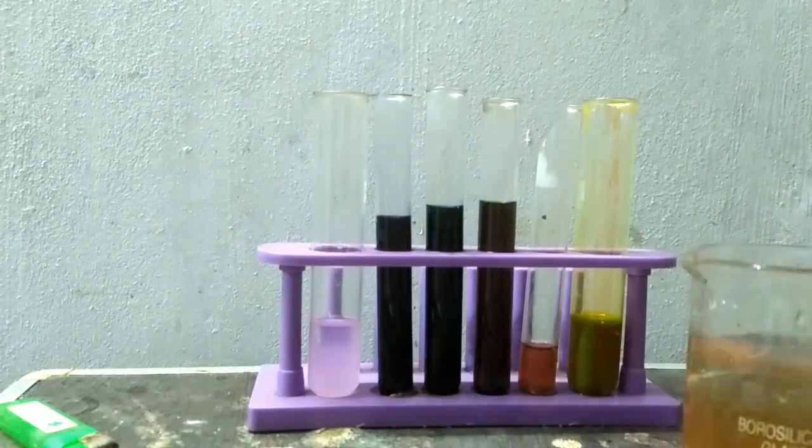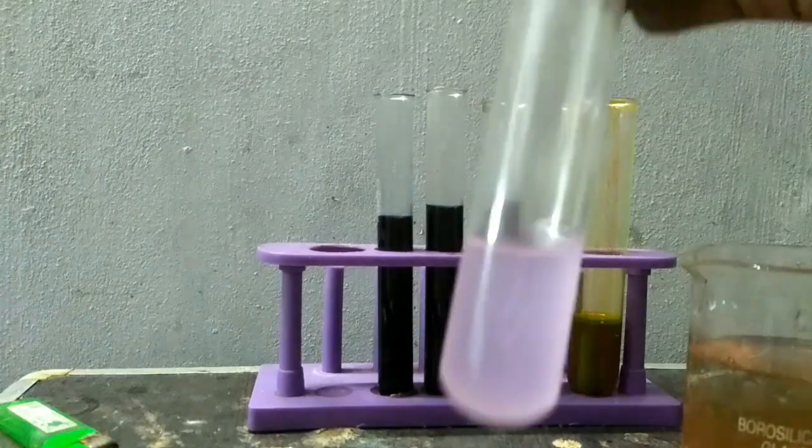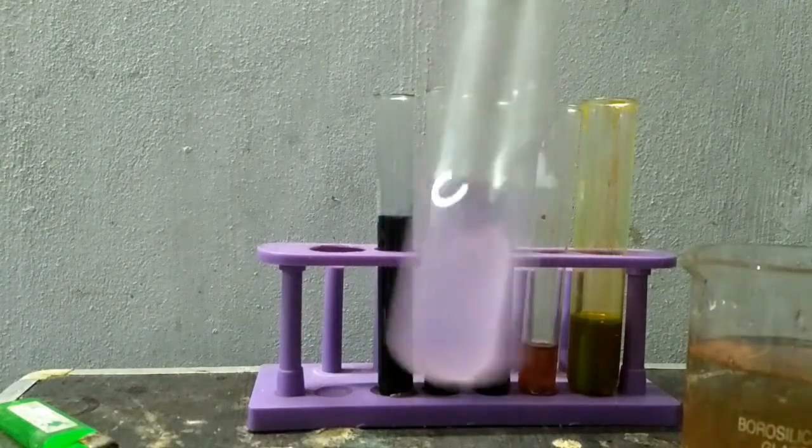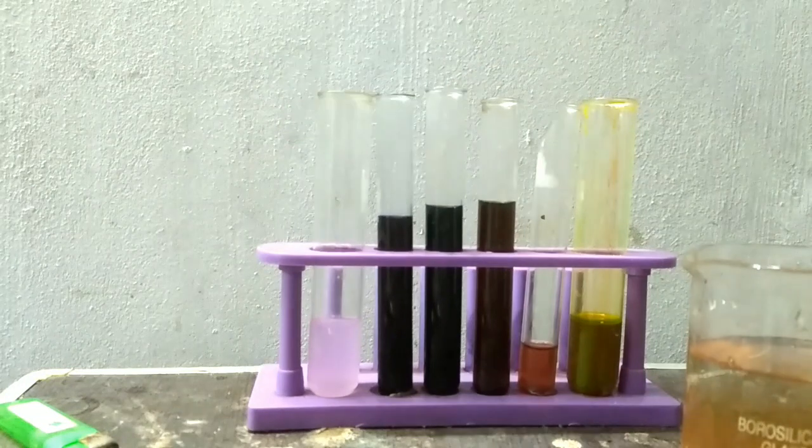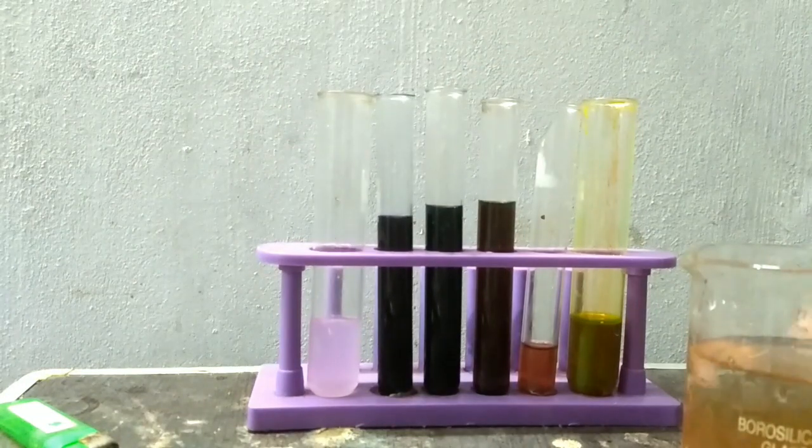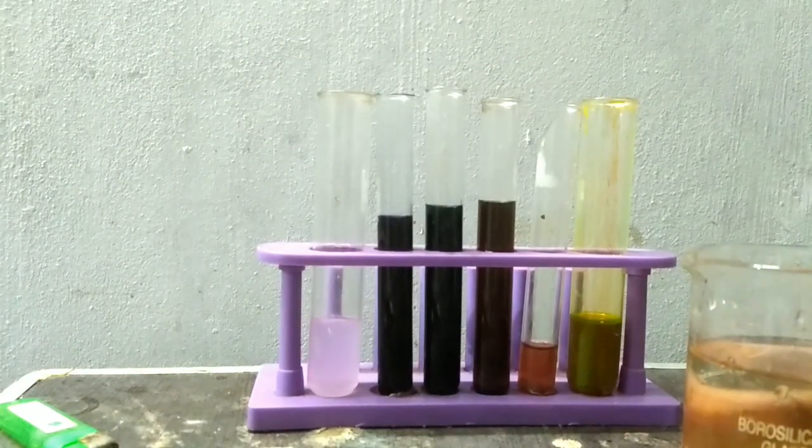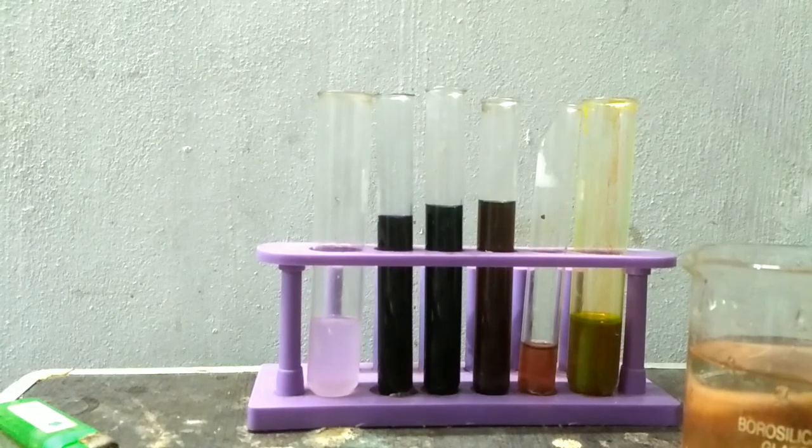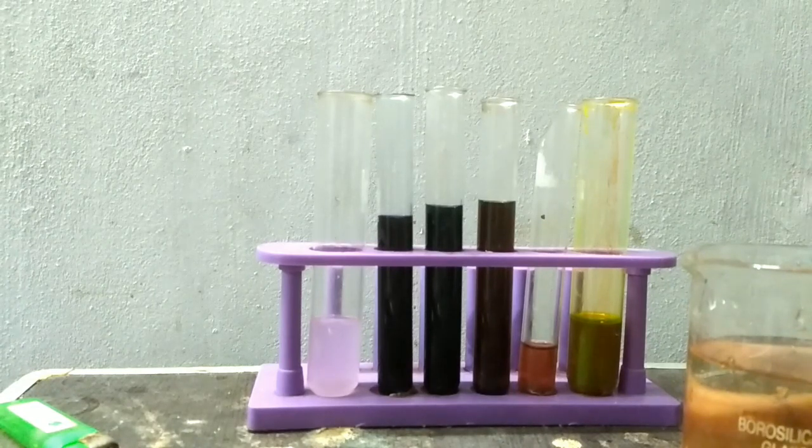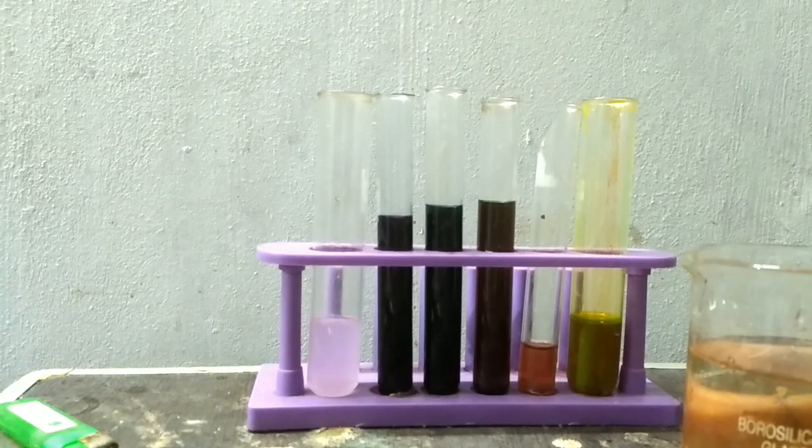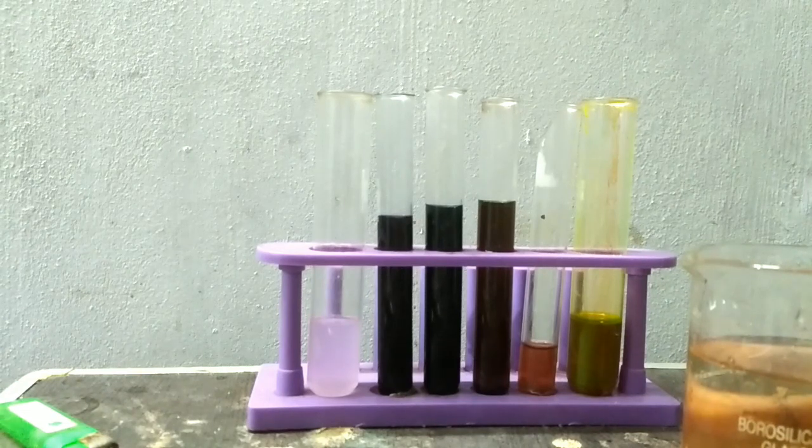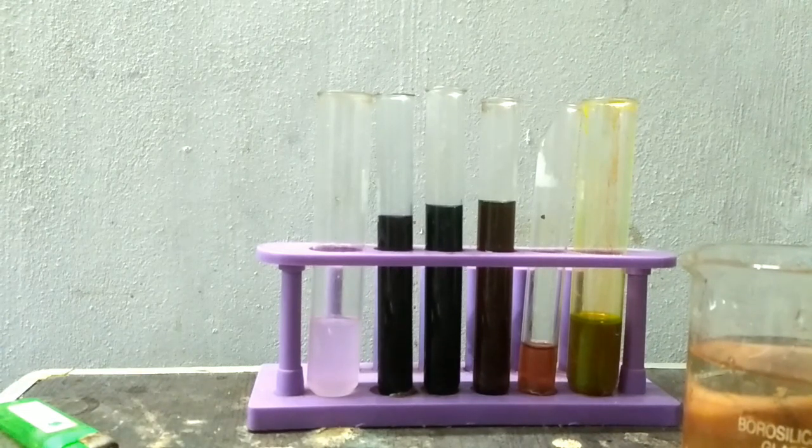Observe that the phenolphthalein solution has turned colorless. This is because at high pH phenolphthalein becomes colorless. At pH above 14, phenolphthalein turns again colorless and it cannot be turned back to pink by acidifying it.